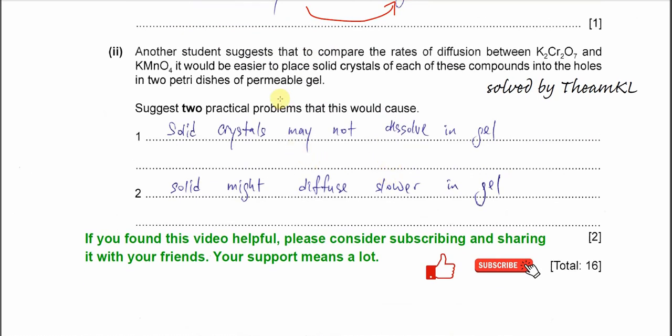Part 2: another student suggests that to compare the rates of diffusion between potassium dichromate and KMnO4, it would be easier to place solid crystals of each of these compounds into the holes in the petri dishes. Suggest two practical problems that this would cause. This is not a good way to do the experiment because with solids we don't know whether it dissolves or not, whether it's soluble or not. If we make it into solution, we know that it's dissolved well and it can diffuse well later. The first thing is the solid crystal may not dissolve in gel.